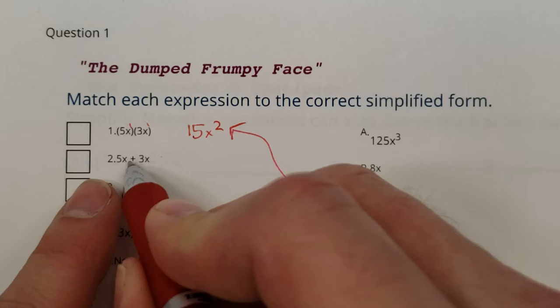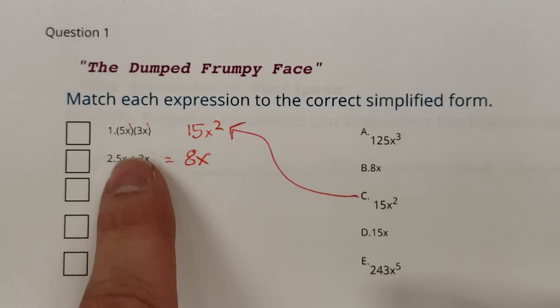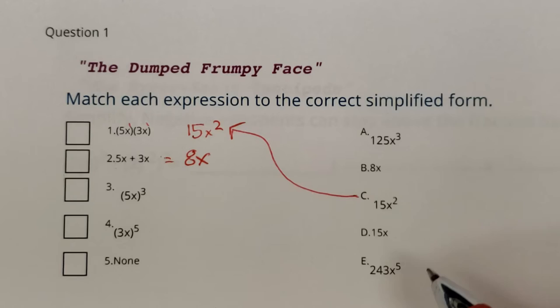Number two is 5x plus 3x. So five things plus three things is going to equal eight things. Notice when you do addition, the variable stays a regular x. The only thing that upgrades exponents is multiplication. Addition has no impact on exponents. This is just a regular 8x. There you are right there.